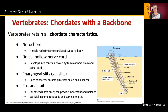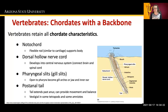We see a dorsal hollow nerve cord, which in vertebrates develops into the central nervous system and connects the brain with the spinal cord. We see the pharyngeal gill slits, which open to the pharynx and can either become gill arches, a jaw, or an inner ear in other vertebrates. And then there is the post-anal tail, which extends past the anus and helps provide movement or balance for some organisms.